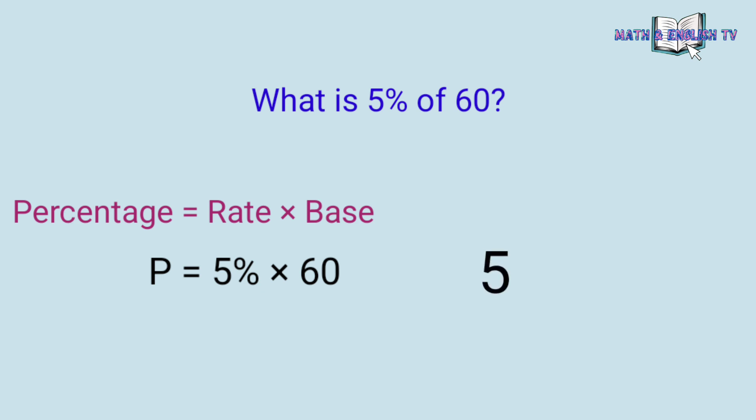Tingnan natin itong 5. Ang decimal point nito ay dito. Ngayon, imove natin ang decimal point ng dalawang ulit pakaliwa. One, two. So, dito na yung decimal point. Ngayon, may space dito. Ang gagawin lamang natin ay lalagyan natin ang zero as placeholder. Naging five hundredths na ngayon, yung five percent.